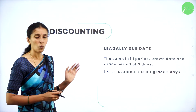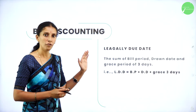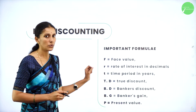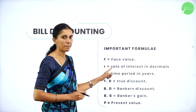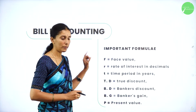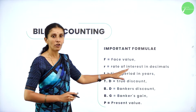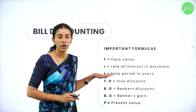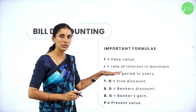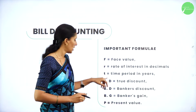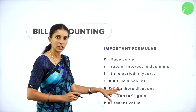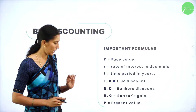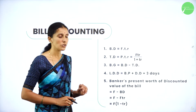So let us recall all the formulas required for these concepts. First, let me introduce the terms used in the formulas: F represents face value of the bill, R is rate of interest in decimals, T is time period in years — if given in months or days, convert to years. TD is true discount, BD is banker's discount, BG is banker's gain, and P is present value.